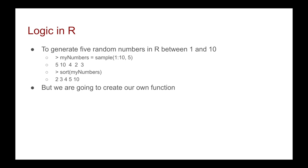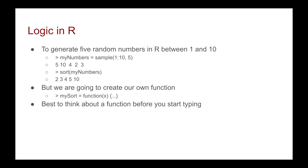The structure will look something like this: my_sort is equal to function, then with the open brackets you put in your parameters, and then in your curly brackets you're going to put in the code. But it's best to think about a function before you start typing. So we're going to go through a little bit of the logic, and then go to RStudio and program it together.